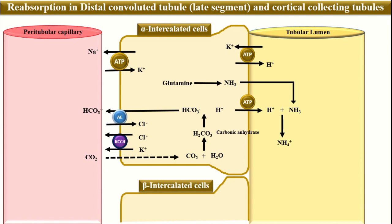The second important urinary buffer is the phosphate buffer. The hydrogen ions in the tubular lumen combine with phosphate coming through the upper segments of the nephron. When hydrogen combines with phosphate, it leads to the formation of H2PO4. Both H2PO4 and ammonium ions are excreted via the urine. This is how excessive hydrogen ions or acidity is eliminated from the body.